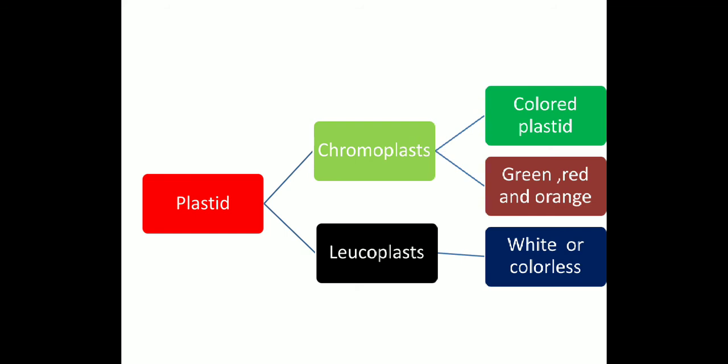Plastids are mainly of two types: chromoplast and leucoplast. Chromo means color and leuco means white. Chromoplast consists of colored plastids — the green pigment is known as chloroplast, and red and orange pigments are also present in plants, giving different fruits and flowers their different colors. Leucoplast is white or colorless plastid.